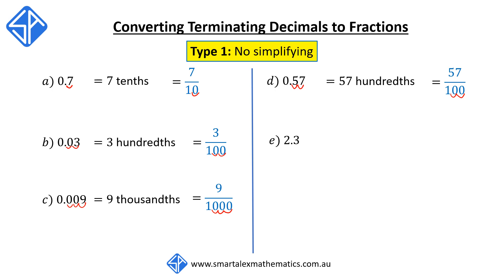Our next example is 2.3. This time our number contains the whole part 2 and the fractional part 0.3. So this is read as 2 wholes and 3 tenths, and it gets written as 2 and 3 over 10. The 0.3 has one digit after the decimal point, corresponding to 3 tenths, where we have 1 zero after the one.